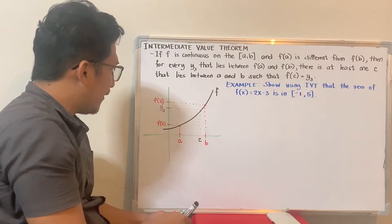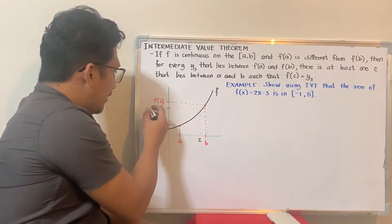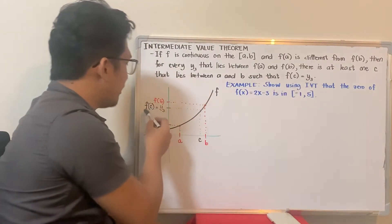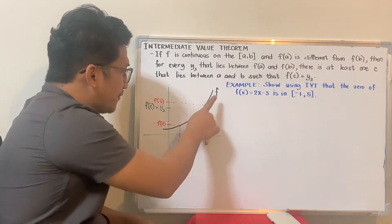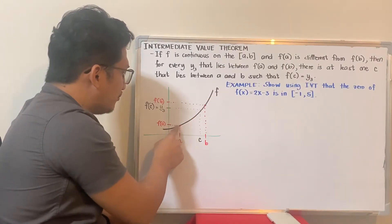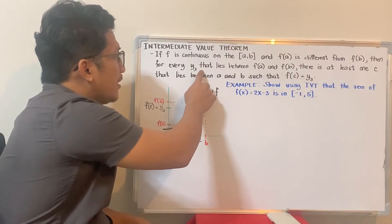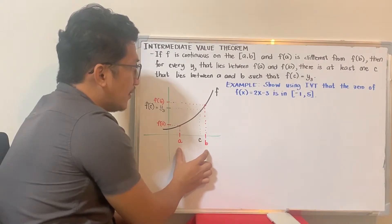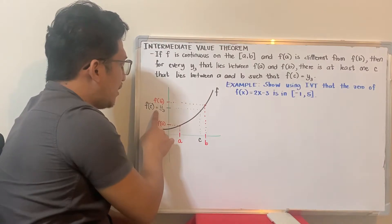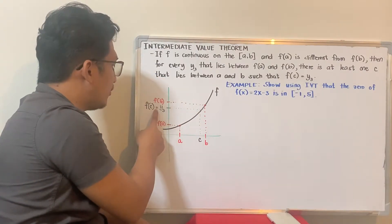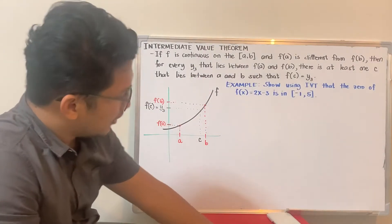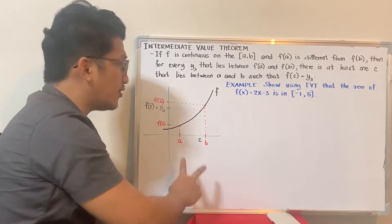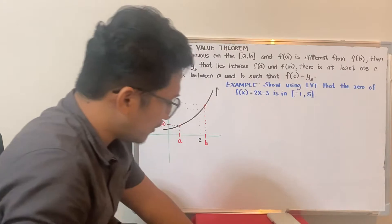So, we assume now that y-sub-3 is therefore our f(c). If you have a here, when you use the function and substitute a, the output is f(a). If y-sub-3 is in between f(a) and f(b), there is at least one c in between a and b such that f(c) equals y-sub-3. That's the short explanation. Let's have an example.